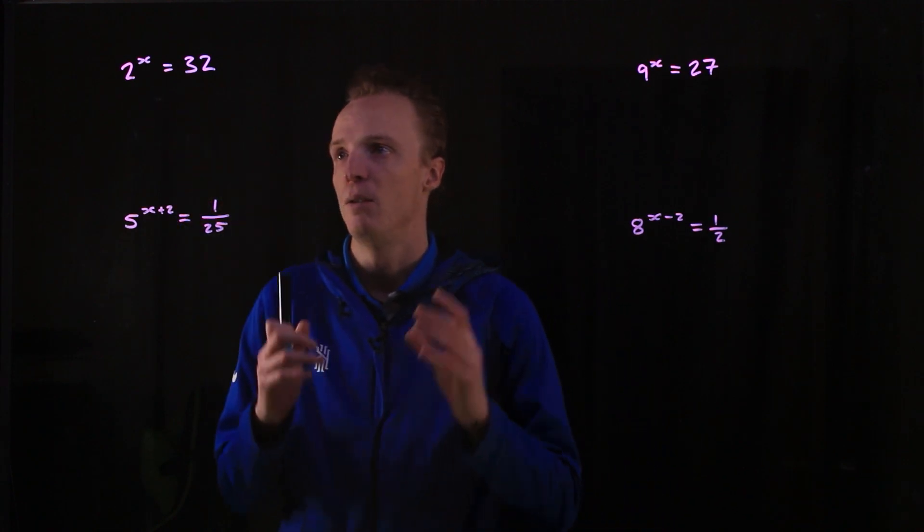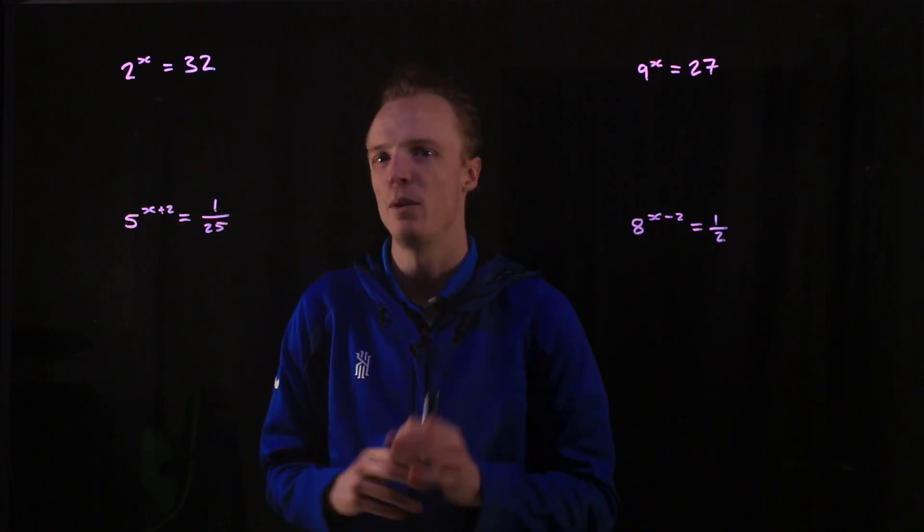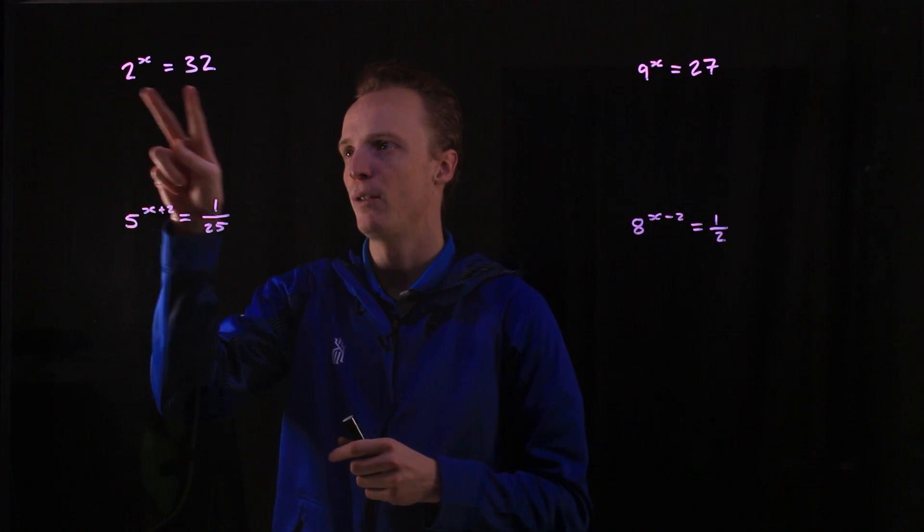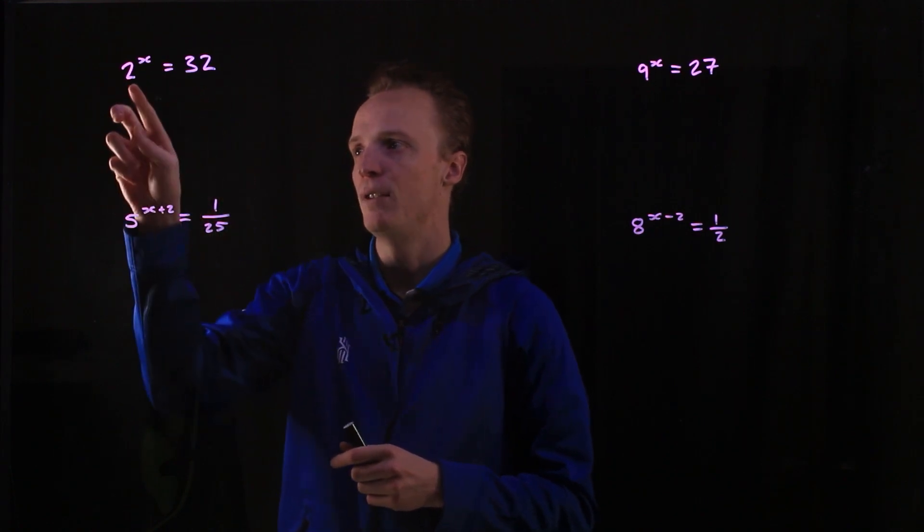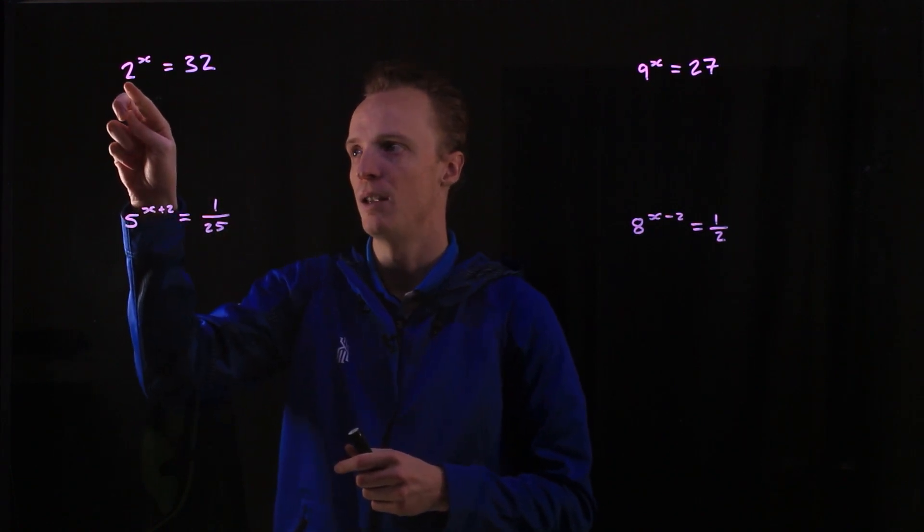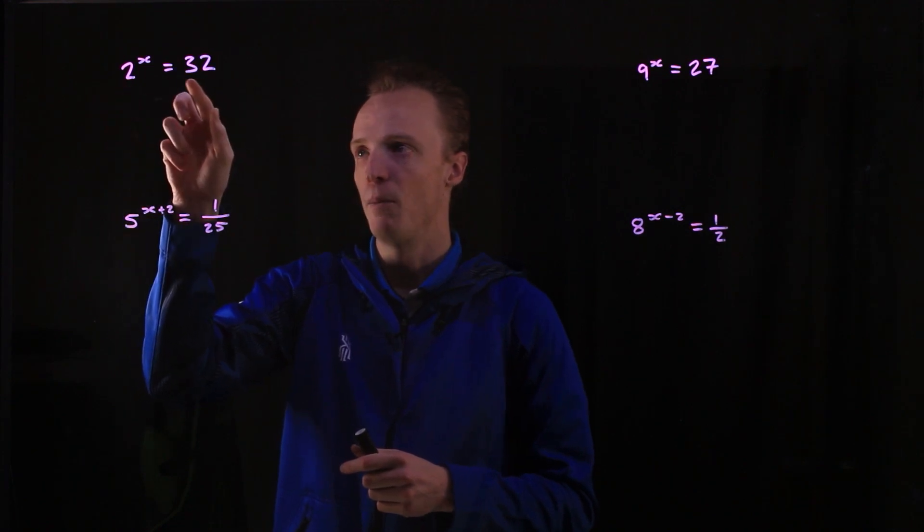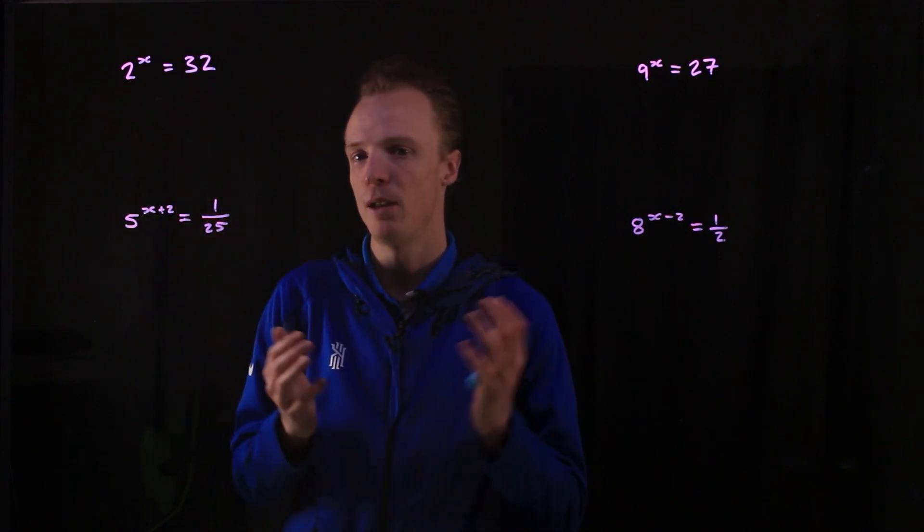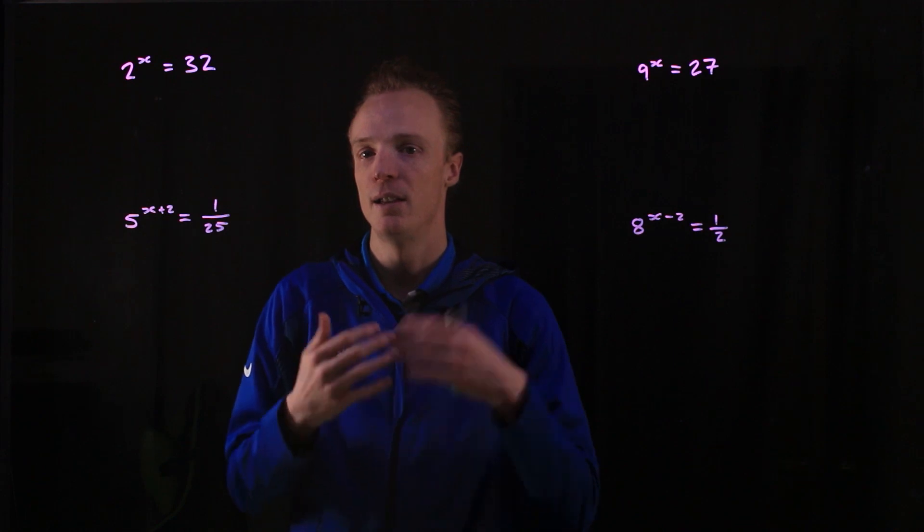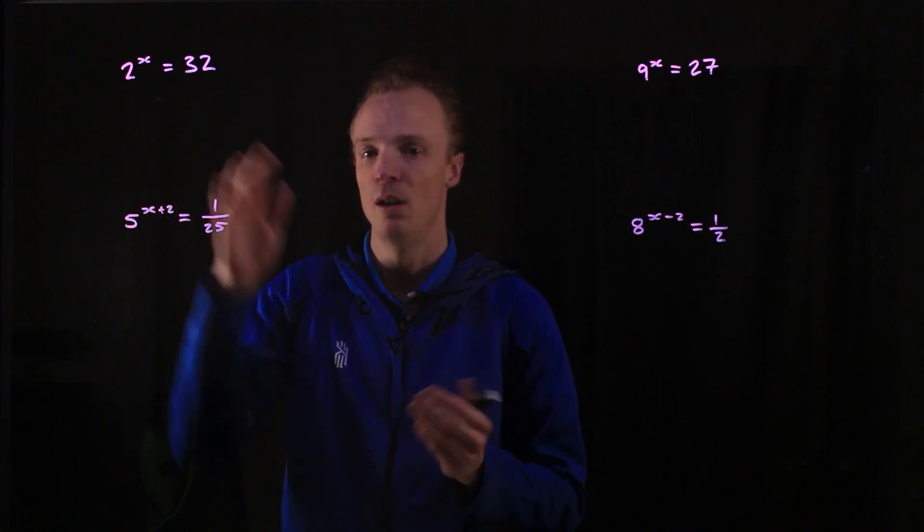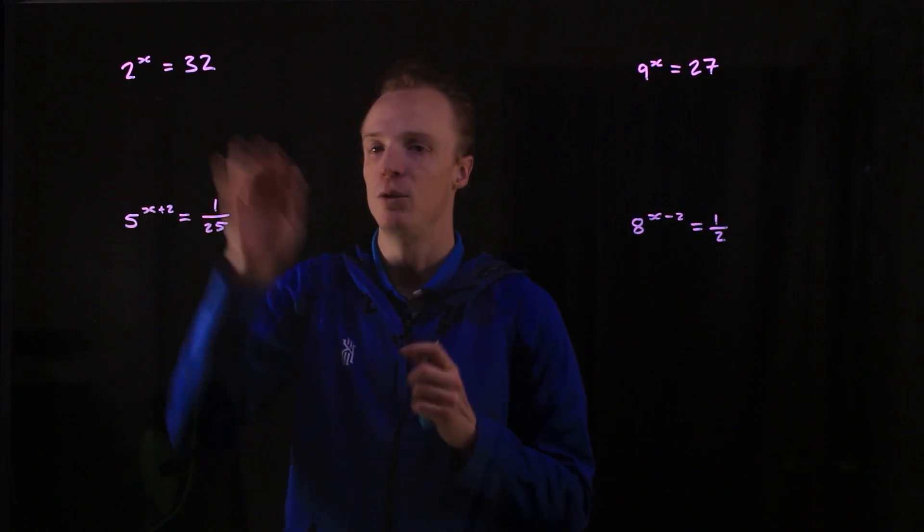Starting with this problem here, to equate indices what we actually need is both sides of our equation to have the same base. In this case we've got a base of 2 and we've got the number 32. If I can rewrite 32 as an exponent with a base of 2, then I can now equate the two indices.